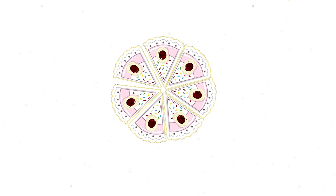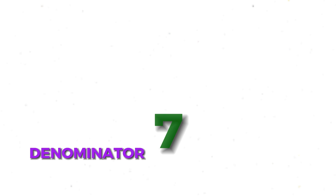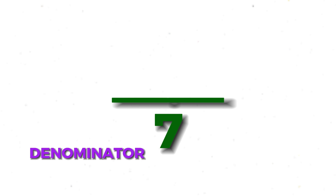This cake has been divided into seven, and one piece is selected. How do we write the fraction? We write the denominator, which is seven, because the cake has been divided into seven pieces.